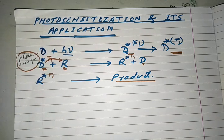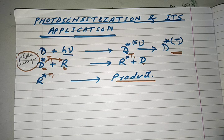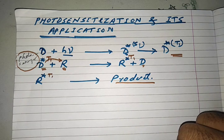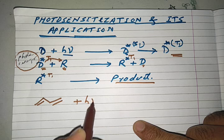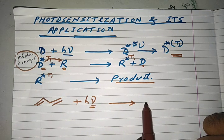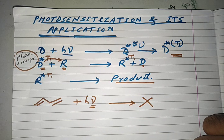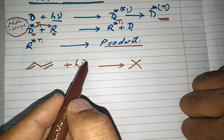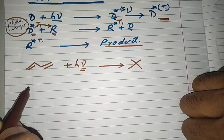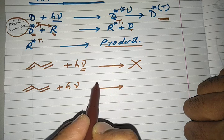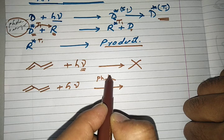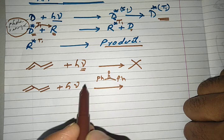Let us take a particular example to understand photosensitization. Consider butadiene — butadiene does not absorb radiation, therefore no reaction is possible. However, when you mix butadiene and irradiate it in the presence of a sensitizer — here we can use benzophenone, a very famous compound found in many examples — then this butadiene will definitely convert into products.